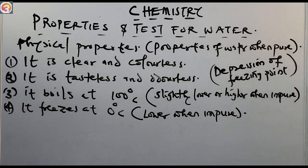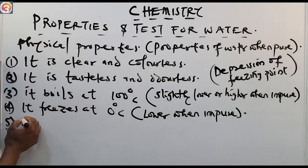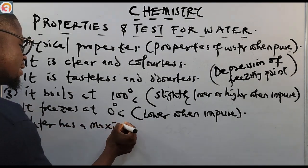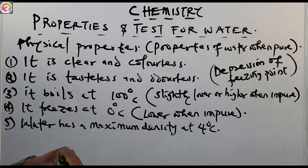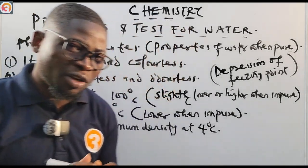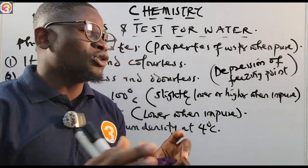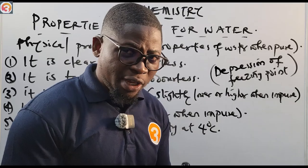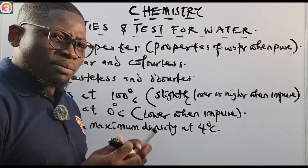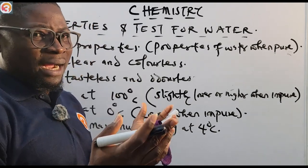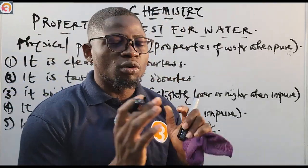Number five: water has a maximum density at four degrees Celsius. You may have heard of anomalous expansion of water. Water behaves abnormally — it does not behave like other substances. Generally, when you heat something it expands and when you cool it, it contracts.